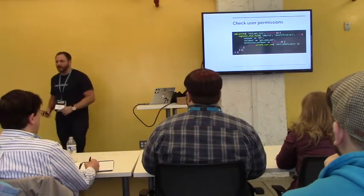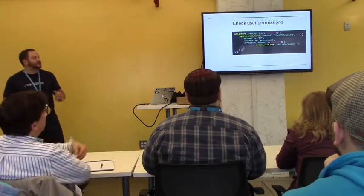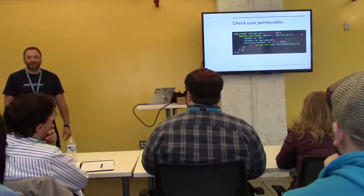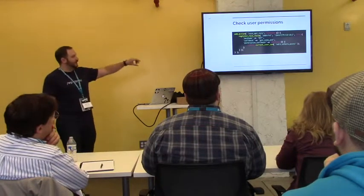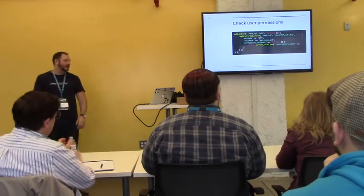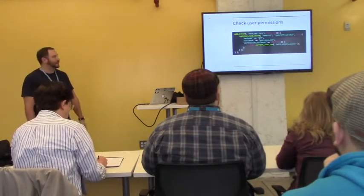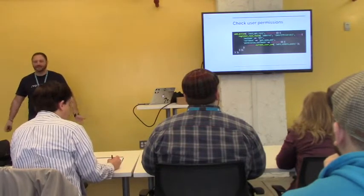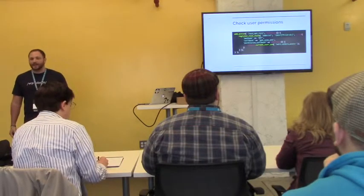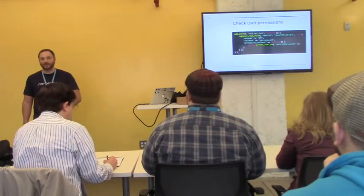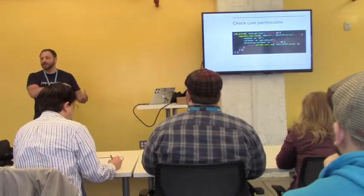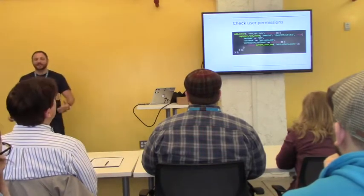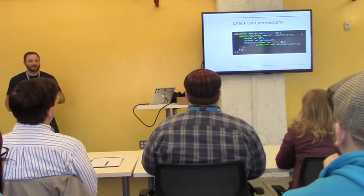Let's say I only want certain users to be able to call that endpoint. If you just registered the route right now, there's no authentication — anybody can start modifying your site, which you don't want. There is another parameter called permission_callback in register_rest_route. In the permission callback you do your capabilities check. I'm using current_user_can('edit_others_posts') as the capability in this example. Whatever capabilities you have in your system, you do your check there. The WordPress API checks who the user is using the cookie and nonce, then checks if that user has the required permission. If they do, it continues the action; if not, it kicks back saying they can't do it.